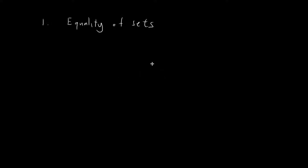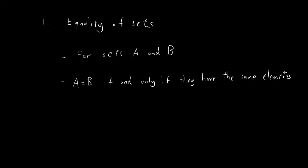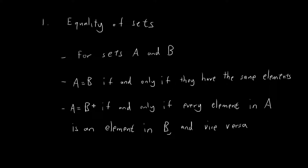In this video, I will define what it means for two sets to be equal, and then I'll show you some examples. So here's the definition. Let's say we have two sets, A and B. A and B are considered equal if and only if they have the same elements. A more precise way to express this is to say that A and B are equal if and only if for every element in A, it is also an element in B and vice versa — for every element in B, it is also an element in A. If this condition is satisfied, then we can say that A is equal to B.